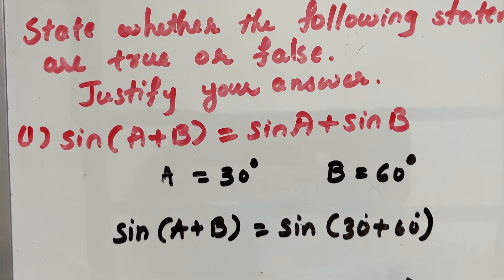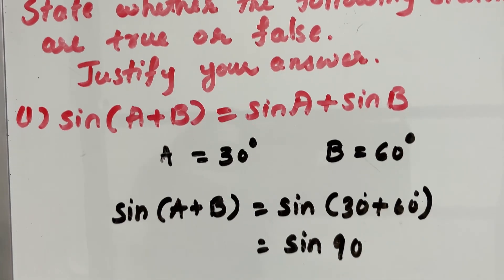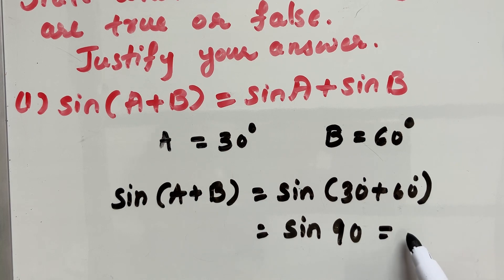Which is nothing but sine 90 degree. What is sine 90? Sine 90 is nothing but 1. Whole number 1. This is our LHS.